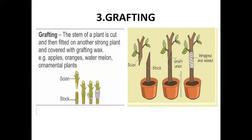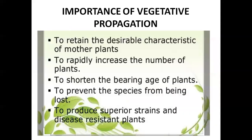Now let's look at the importance of vegetative propagation. It helps to retain the desirable characteristics of a mother plant. It helps to increase the number of plants and shorten the bearing age of plants. Vegetative propagation prevents the species from being lost and helps to produce superior strength and disease-resistant plants.